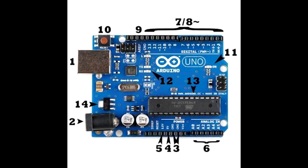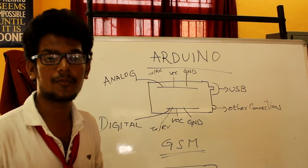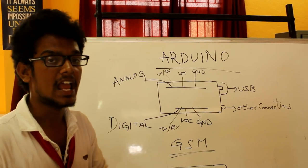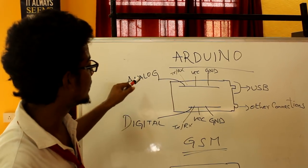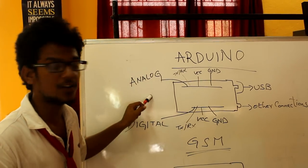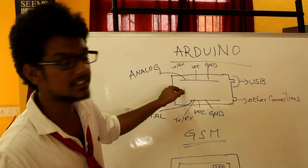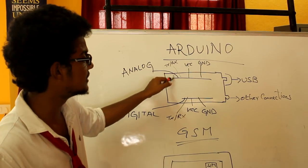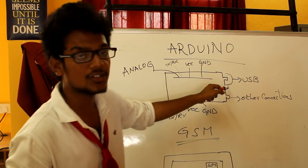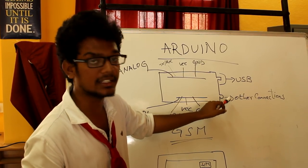This is Alan Jay. I am here to present the component called Arduino. Arduino contains two categories: Analog and Digital. It contains connections called TX, RX, VCC, and Ground. The whole power supply is generated through the VCC. Here we can use the USB connections, and other connections can be placed in the respective connection ports.